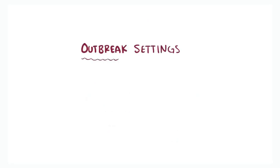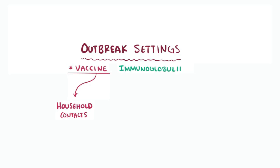In outbreak settings, the measles vaccine can be given to household contacts, and measles immunoglobulin can be given to pregnant women and young infants to help prevent others from getting sick.